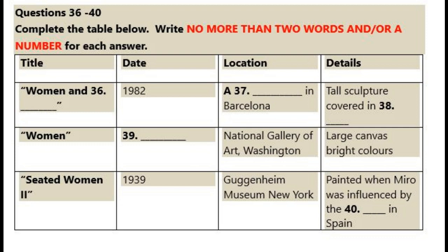I think it shows that, towards the end, he was feeling as playful as a young man. And I think he wanted to share this playfulness in a park, on such a big, very public scale. And now, another representation of a woman, this time just called Woman.